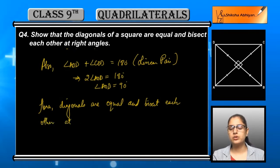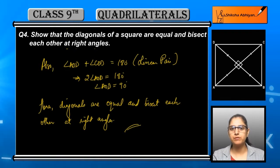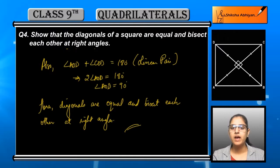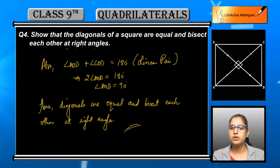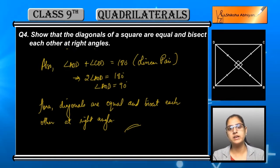Since these two are equal, angle AOD plus angle COD equals 180 degrees, because they form a linear pair. Angle AOD and angle COD are both a linear pair, so their sum is 180 degrees. Since they are equal, twice angle AOD equals 180 degrees, therefore angle AOD equals 90 degrees. So the diagonals intersect at 90 degrees.